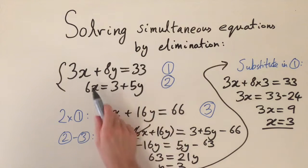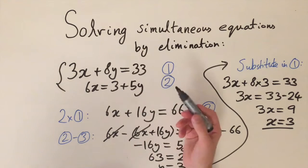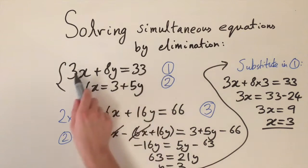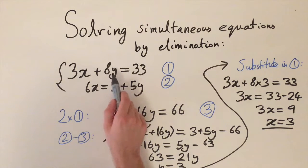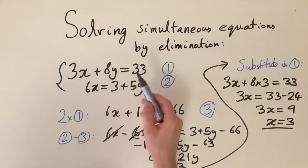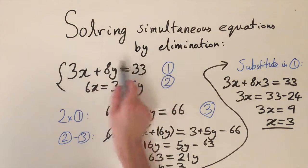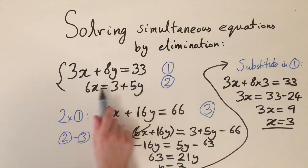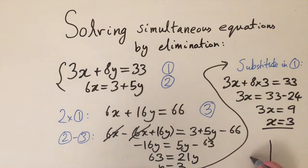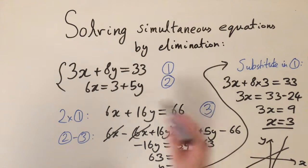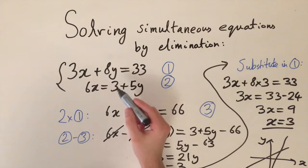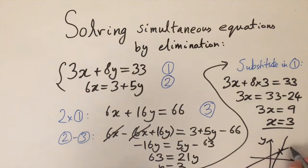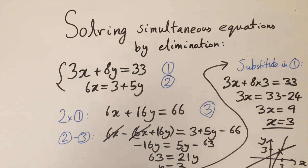Let's consider what this means geometrically. Each equation has variables x and y, so we can rearrange each to get y as a function of x — meaning each equation is a straight line. If you draw these on an xy-plane, you get two lines, and what we're actually doing by solving this pair of simultaneous equations is finding the value of x and y where these two lines meet — that's the geometric interpretation.